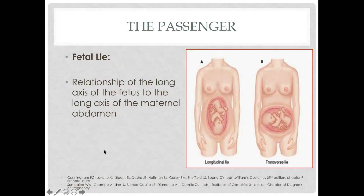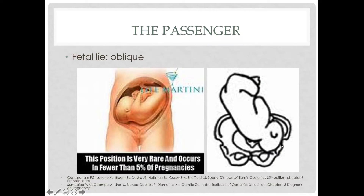Next is fetal lie, which is the relationship of the long axis of the fetus to the long axis of the maternal abdomen. In this picture we have longitudinal lie, where the fetal long axis is along the long axis of the mother. On the right we have a transverse lie where the fetal long axis is perpendicular to the long axis of the mother. And this is the oblique lie where the long axis of the fetus is about 45 degrees deviated from the long axis of the mother.